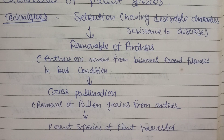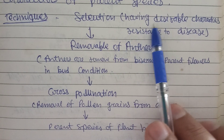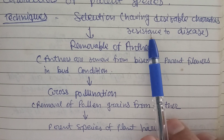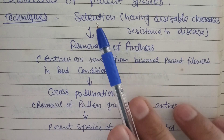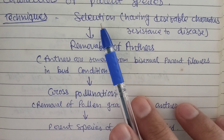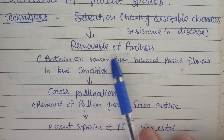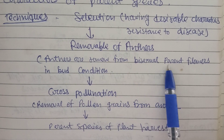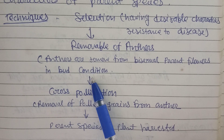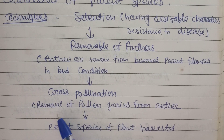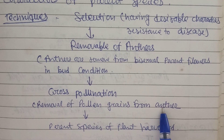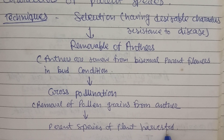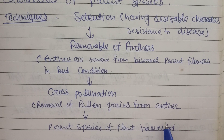The techniques of hybridization are: first, selection — selecting plants with desirable characters such as disease resistance; second, removal of anther — anther parts are removed from bisexual parent flowers in bud condition; third, cross pollination — removal of pollen grains from the anther; and finally, the parent species of the plant are harvested.